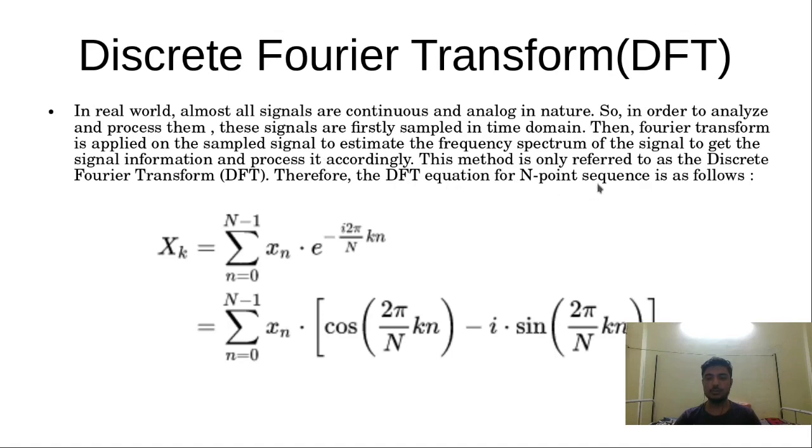The equation for the N-point DFT is given as follows. X_k, which is the kth DFT coefficient, is given as a summation of n equals 0 to N minus 1 of x_n, which is the input signal, times e to the power minus j 2π/N k n, where e to the power minus j 2π/N k n is the twiddle factor.